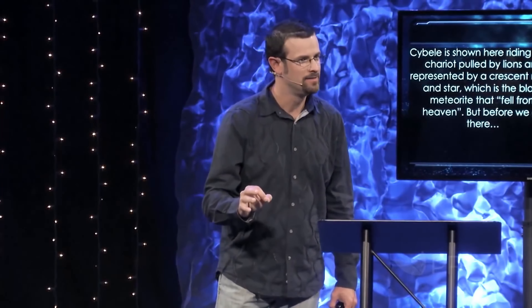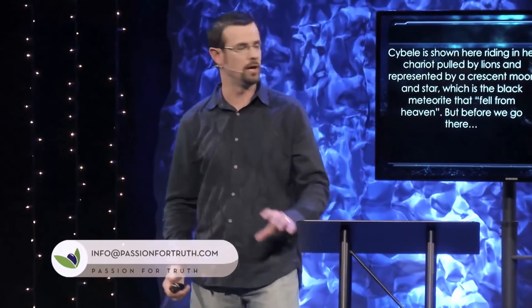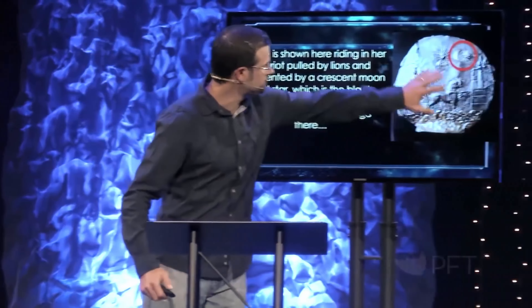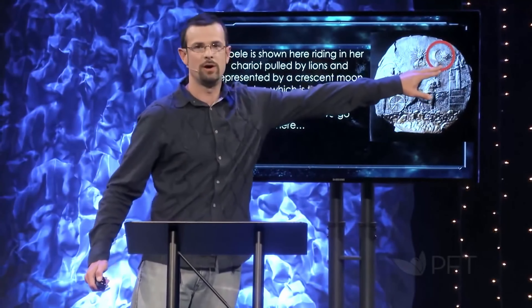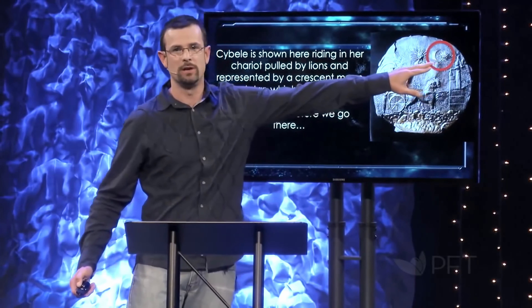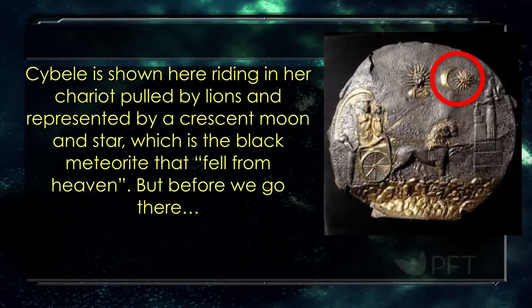Something in the sky alarmed me significantly and sent me on a rabbit trail. This rabbit trail took me to a place I really didn't want to go. I'm going to give you a close-up of this picture here — this is the moon and the star that shows up again on Ishtar's chariot.